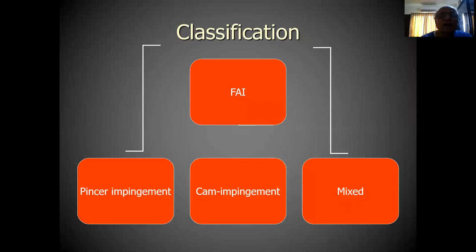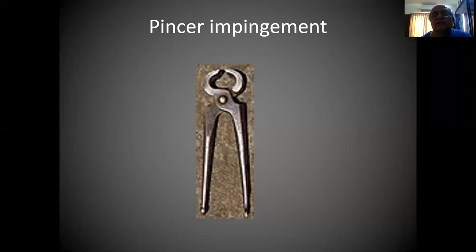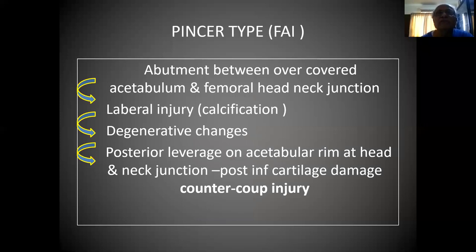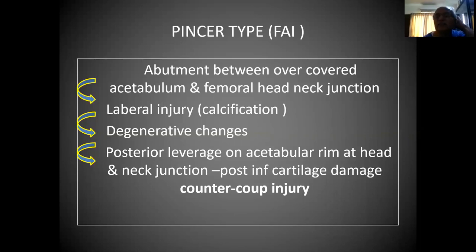So this classification: FAI has pincer impingement, CAM impingement, and mixed picture. Pincer — this is something like holding one of these instruments called a pincer. Pincer-type FAI: abutment between the over-covered acetabulum and the femoral head-neck junction, leading to labral injury, calcification, degenerative changes, posterior leverage on the acetabular rim and the head-neck junction. Then you get posterior inferior cartilage damage — that's called a contrecoup injury.